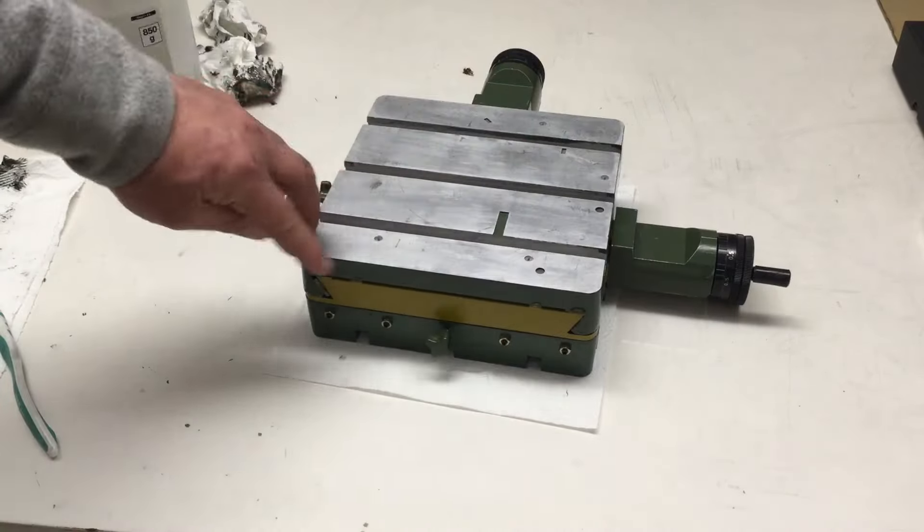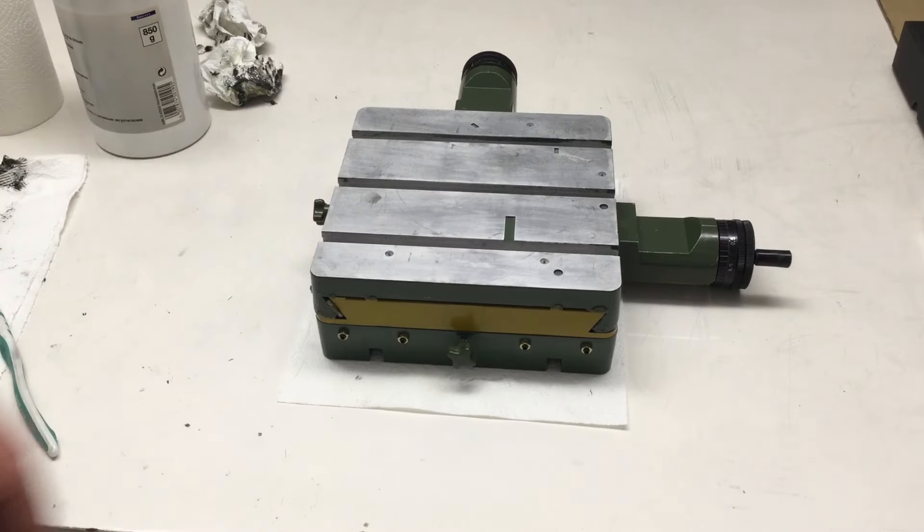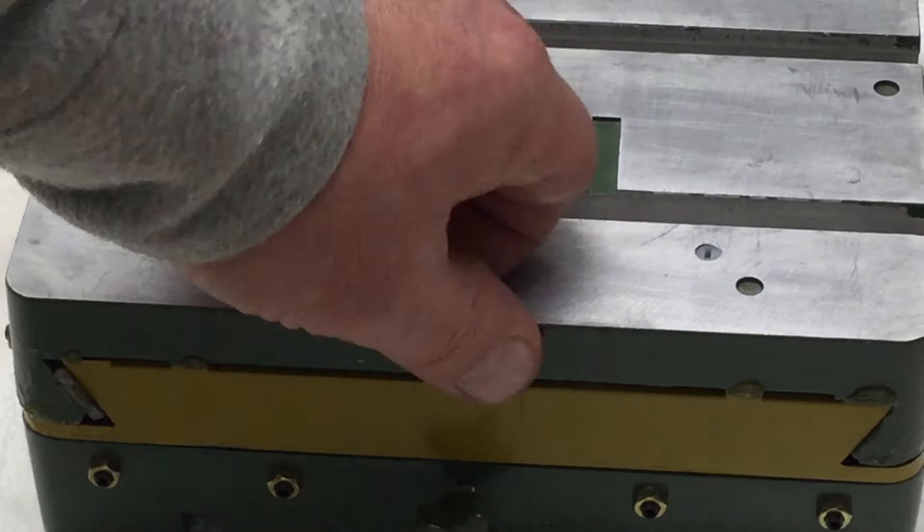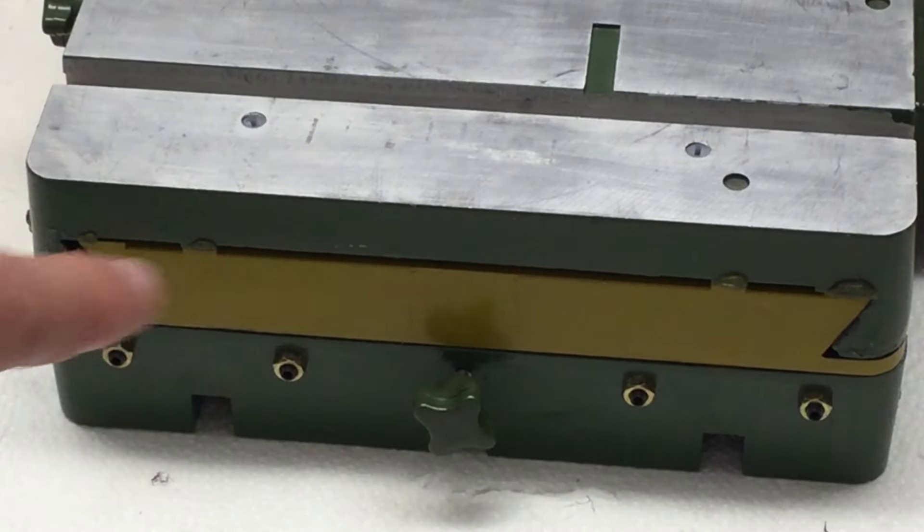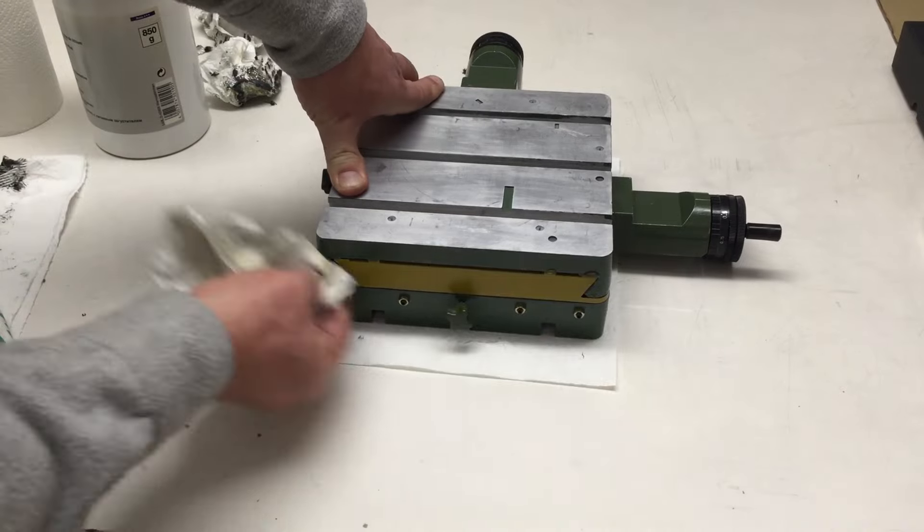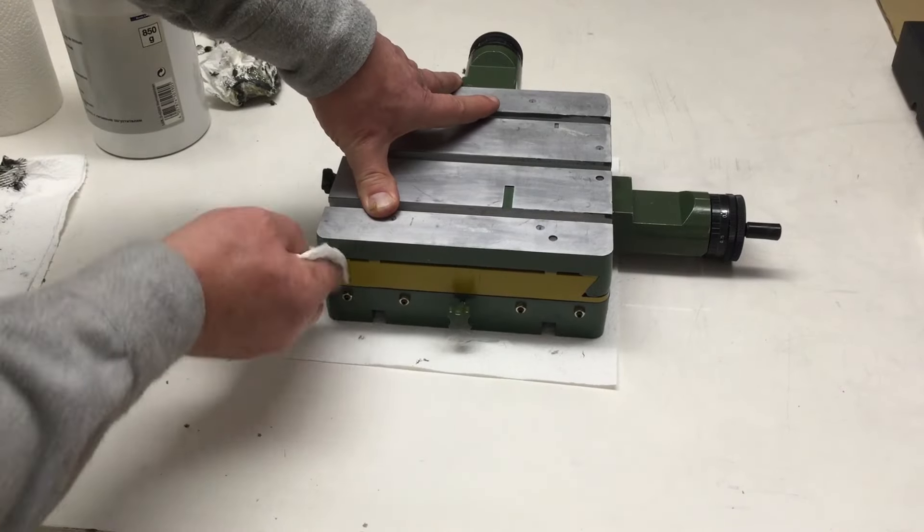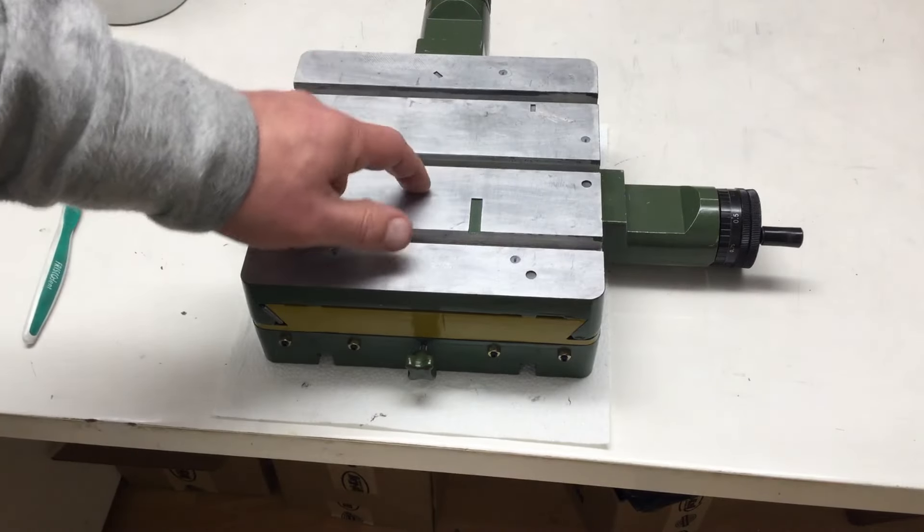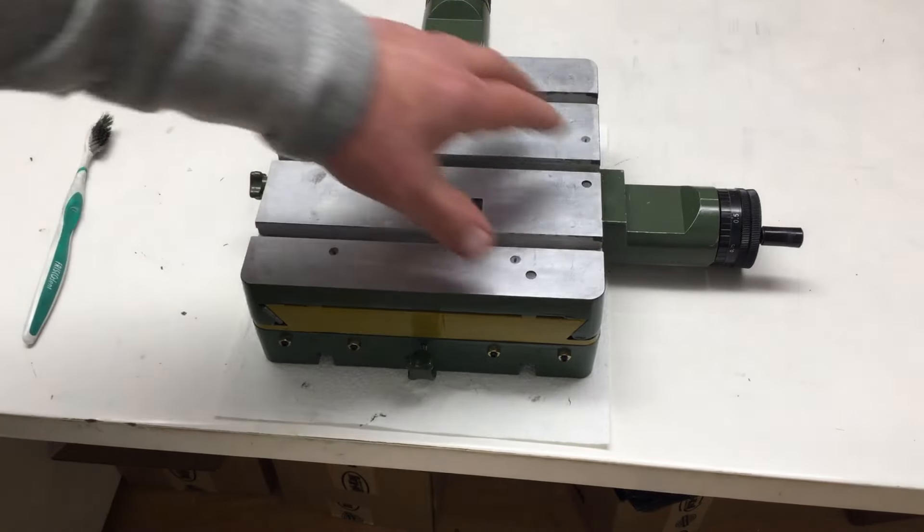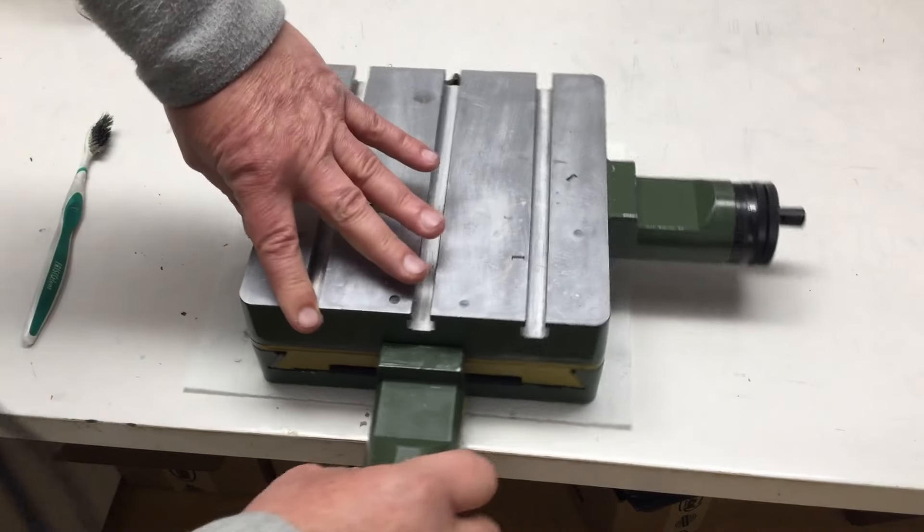On the other side, obviously, too. Maybe I'll zoom in a little bit. Yeah, there you can see the grease. Okay, that was side one. And now we do the same for the lower axis.